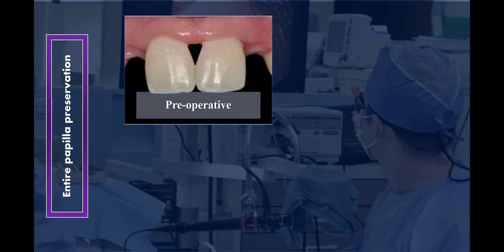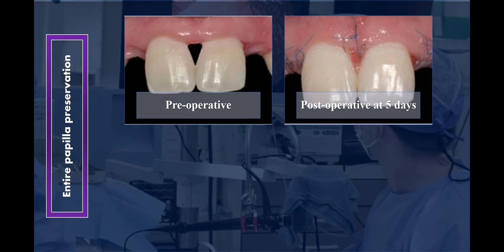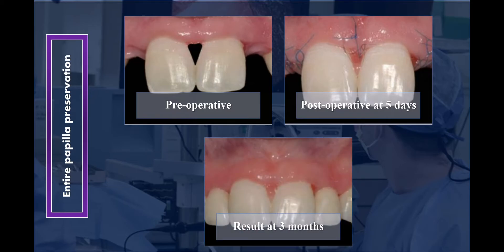In this case, the preoperative review showed congenital missing laterals and loss of papilla. The defect space was wide, which facilitated the procedure. At five days postoperative, stitches can be readily noticed, and the area was complicated by localized necrosis of the tissue. At three months, a scar can be seen at the base of the papilla corresponding to the necrotic zone. This is the result after final restoration had been placed.